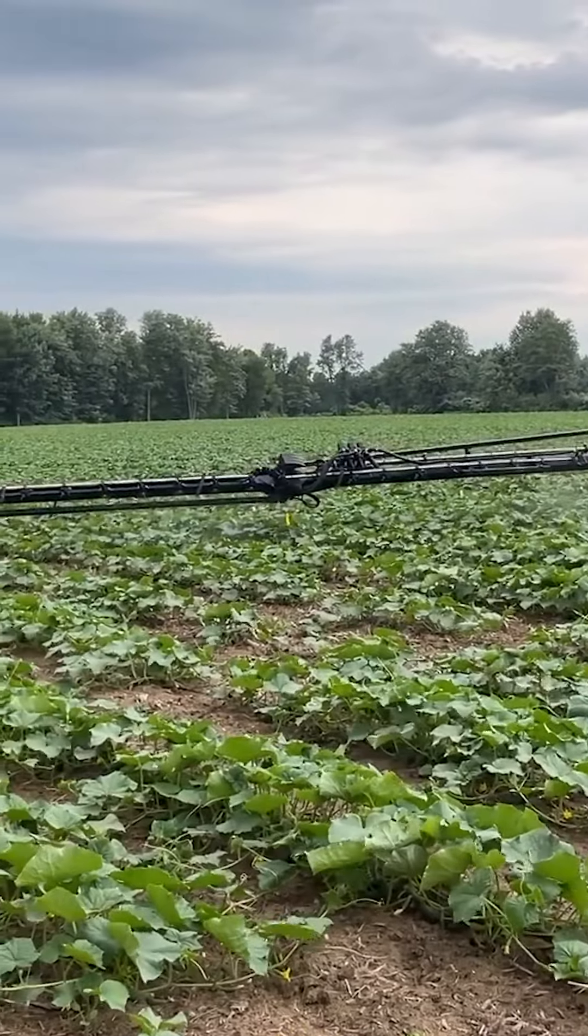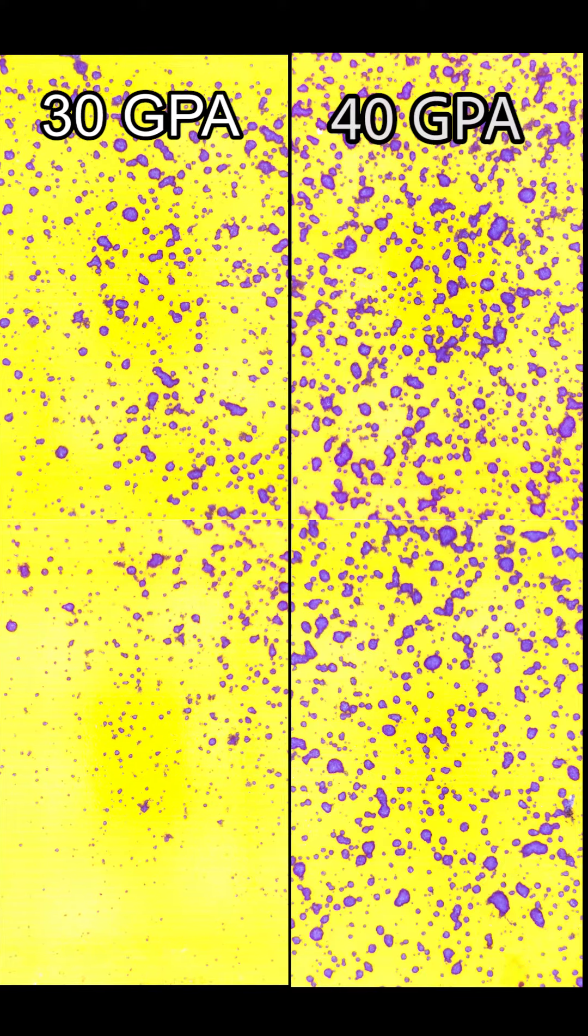We saw that unpredictability when we found a disappointing 9.2% area covered but a high droplet count of 190 deposits per square centimeter at 30 gallons per acre, compared to 21.7% covered and 274 deposits per square centimeter at 40 gallons per acre.